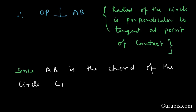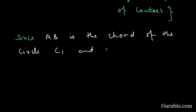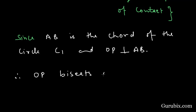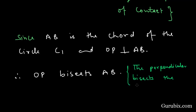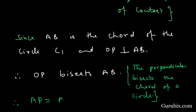Now, since AB is the chord of circle C1 and OP is perpendicular to AB, therefore OP bisects AB. The reason is: the perpendicular from the center bisects the chord of a circle. Therefore AP equals PB, which is what we wanted to prove. Thank you.